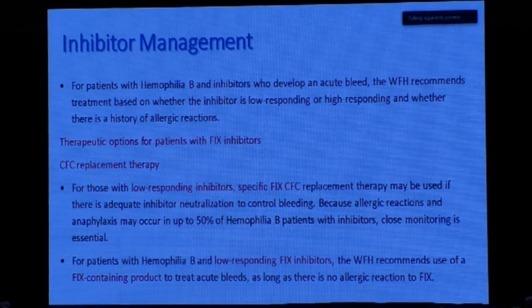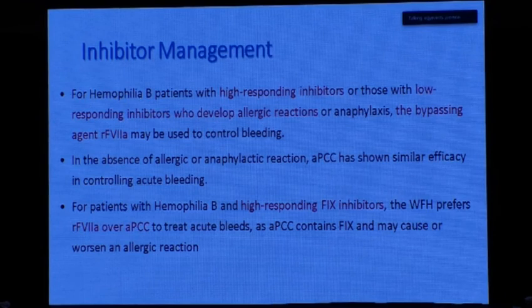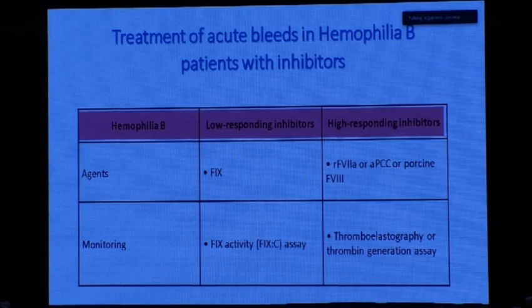For inhibitor management: low responders should be treated with Factor IX at a decreased dosing interval. If any reaction occurs, bypassing agents should be used — recombinant Factor VIIa for high responders. For high-responder inhibitors, do not give PCC because it contains Factor IX and will lead to severe reactions. Use recombinant Factor VIIa instead. The protocol for inhibitor treatment in Hemophilia B is: Factor IX for low responders, Factor VIIa for high responders, with monitoring by activity assays and thromboelastography.